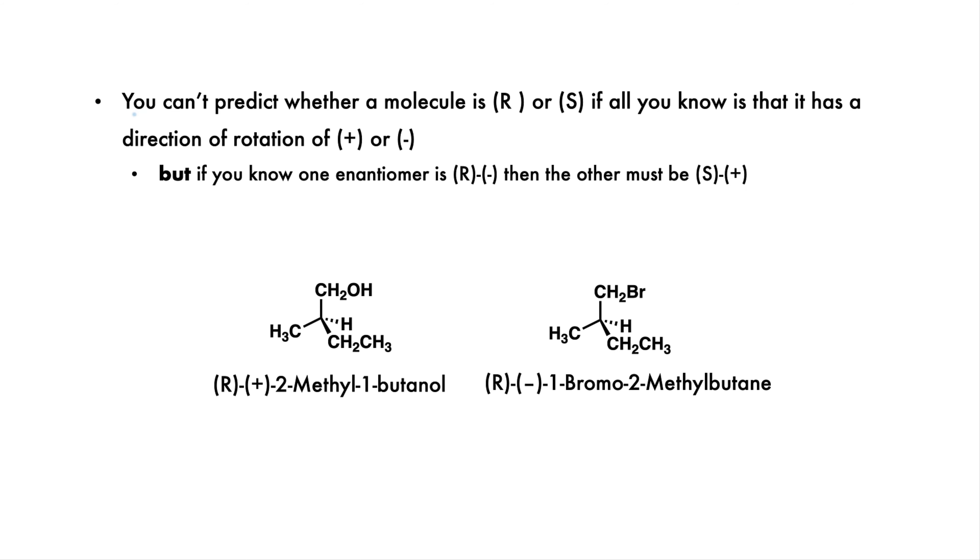A very important point to make is that it's virtually impossible to predict whether a particular molecule will be the R or S enantiomer if all you know is its direction of optical rotation, either plus or minus. In other words, R or S and plus or minus are pretty much unrelated. The two molecules below are quite similar in structure, except one has a hydroxyl and the other a bromide.